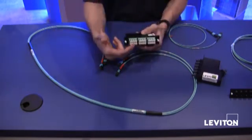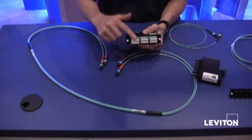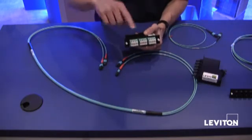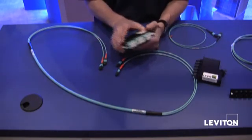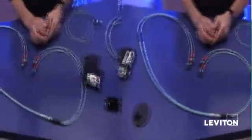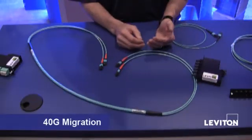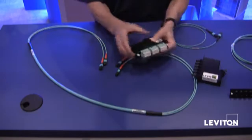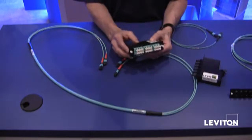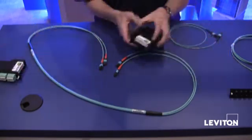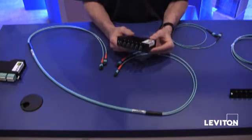In addition to that, you would have your standard duplex LC patch cords coming out of this interface, going directly into the equipment. So that's 10 gig today. When you're ready to migrate to 40 gig, all you need to do is take the LC module that you have here and replace it with an MTP to MTP module.